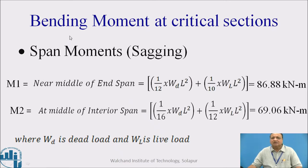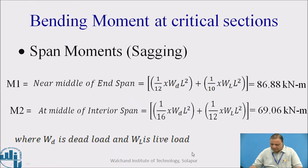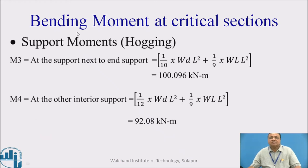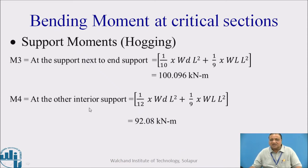Bending moment at critical sections: Span moment M1 near middle of end span = (1/12)·WD·L² + (1/10)·WL·L² = 86.88 kN·m. M2 at middle of interior spans = (1/16)·WD·L² + (1/12)·WL·L² = 69.06 kN·m. Support moment M3 (hogging) at support next to end support = (1/10)·WD·L² + (1/9)·WL·L² = 100.096 kN·m. M4 at interior support = (1/12)·WD·L² + (1/9)·WL·L² = 98.08 kN·m. Support moments are higher in comparison with span moments.